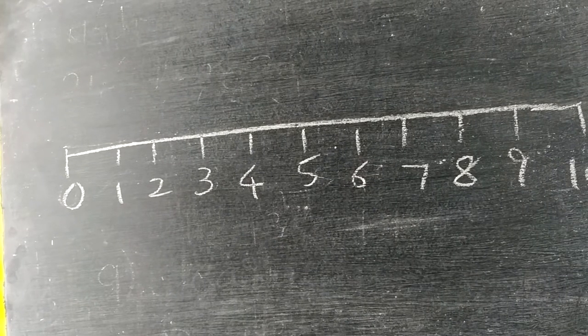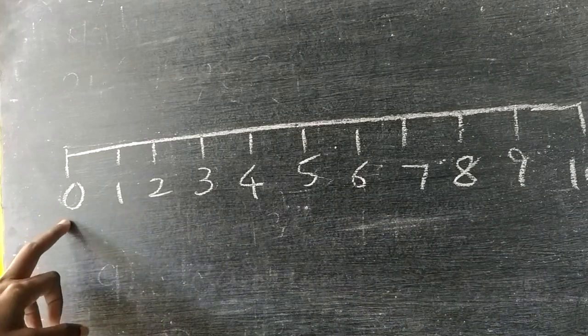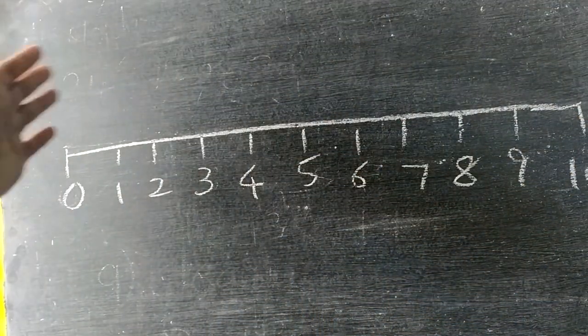Hello students, today we are going to learn before numbers. So the same number line, it will start from 0, it will not end by 10, actually it will be going on, but we cannot draw.